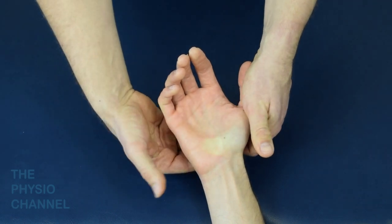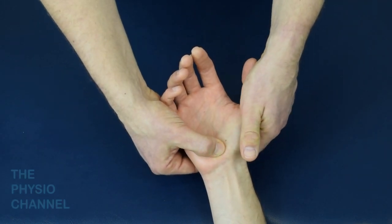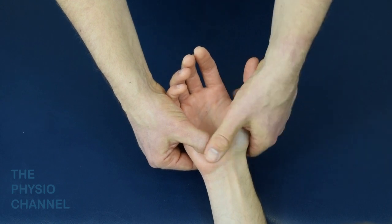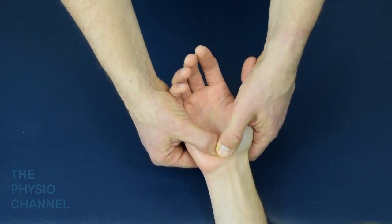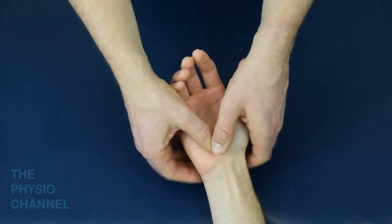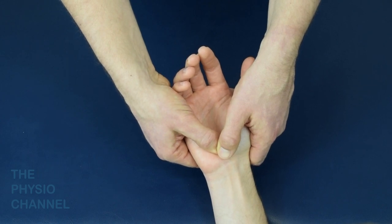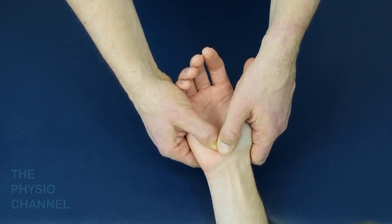To perform the test, push the capitate from the palmar side to the dorsal side using one thumb reinforced with the other thumb and stabilized with the fingers under the hand and wrist. The wrist should be in neutral during this procedure and the thumb should be left free.